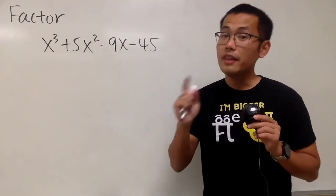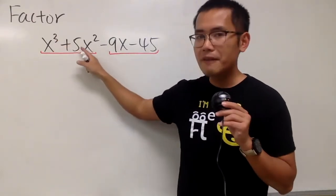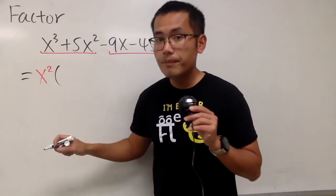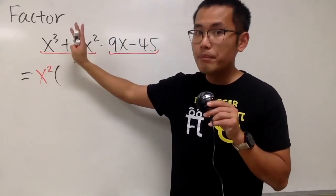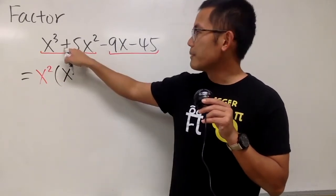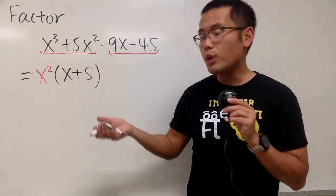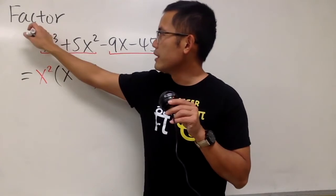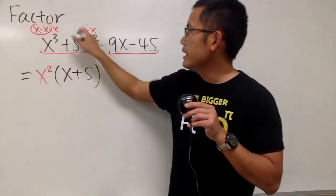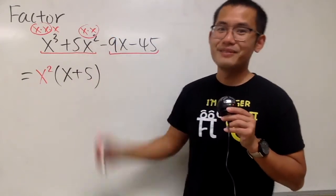We are going to factor this — it has 4 terms, so we should do it by grouping. Focus on the first 2 terms: x cubed plus 5x squared. We factor out x squared. Originally we had x cubed — taking away x squared leaves x to the first power. And for 5x squared, we took x squared out, so we just have plus 5. x cubed can be written as x times x times x, and 5x squared as 5 times x times x — so x squared is in common.